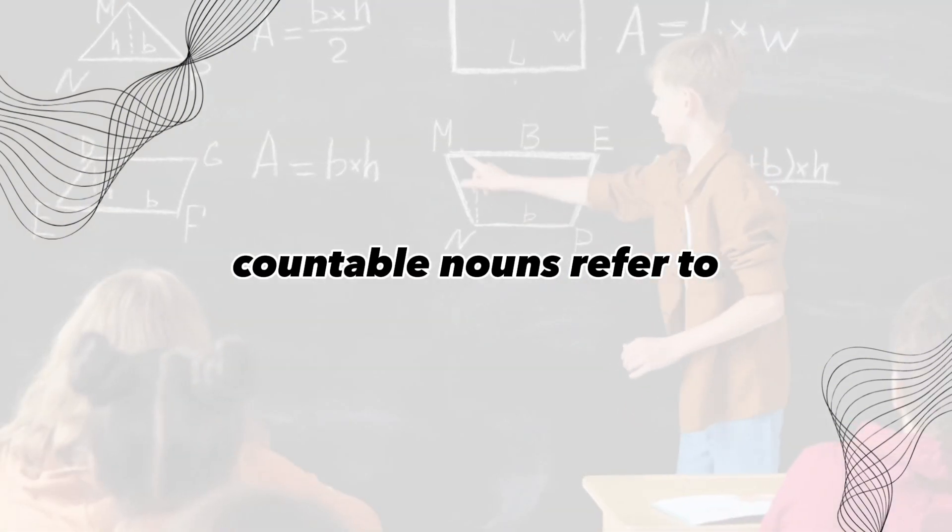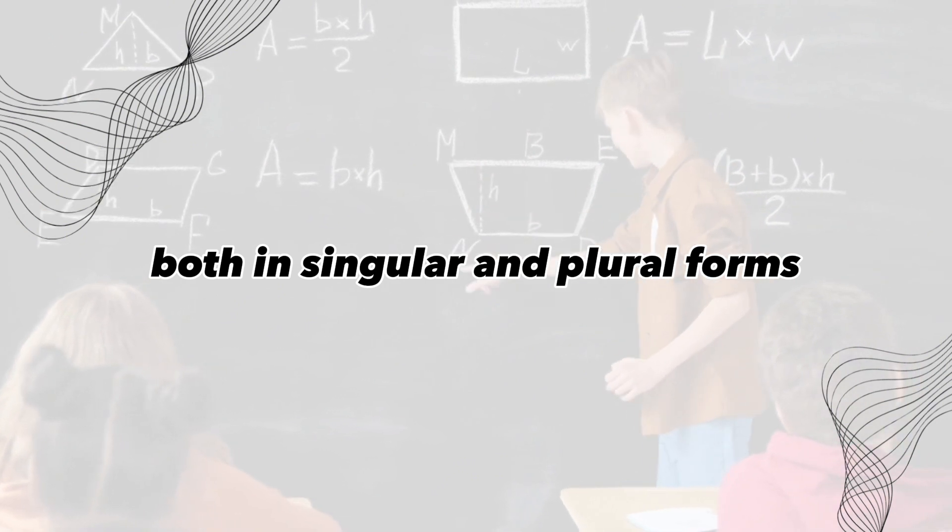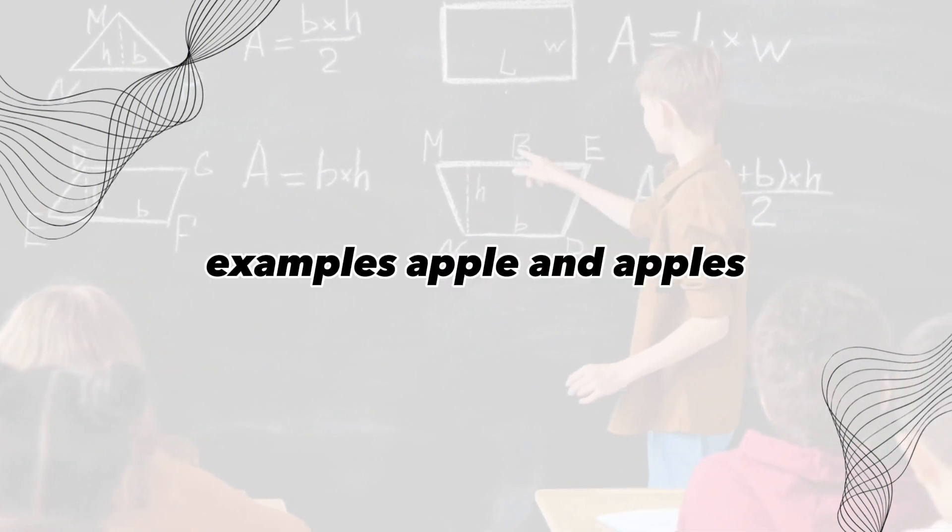Countable noun. Countable nouns refer to objects that can be counted individually, both in singular and plural forms. Examples: apple and apples.